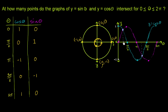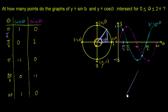Looking at the unit circle, the first intersection looks to be at pi over 4. Pi over 4 is the same as a 45-degree angle. We need to figure out the coordinates of that point, so let's draw a right triangle.